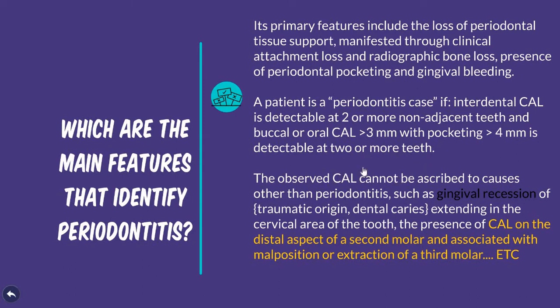This clinical attachment loss cannot be ascribed to any other causes — it shouldn't be due to gingival recession of traumatic origin or dental caries. It should be specifically due to periodontal disease. Similarly, attachment loss on the distal aspect of a second molar associated with malposition or extraction of a third molar doesn't count. Tooth loss and recession must be due to periodontitis, not traumatic causes.